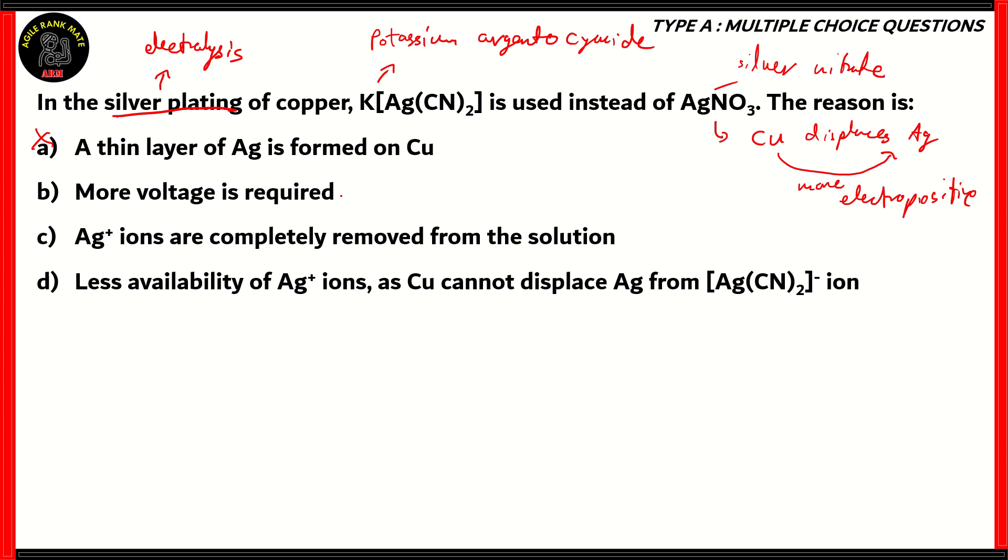Option B: more voltage is required. Both of these require electrolysis and it's more or less the same voltage, so therefore option B is incorrect. Option C: Ag+ ions are completely removed from the solution. Well, in the case of potassium argentocyanide, this is not true, so C is incorrect.